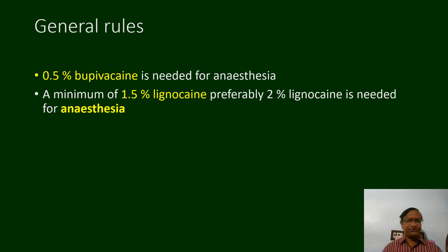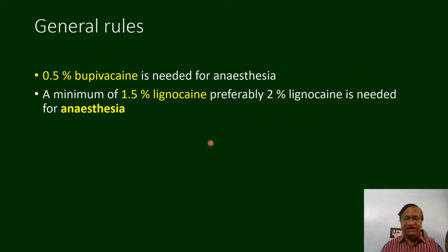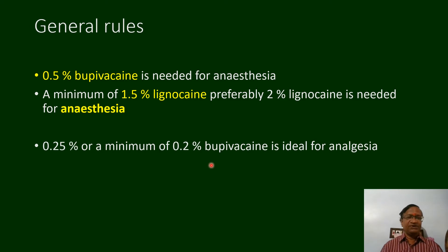Now we go to the general rules. 0.5% bupivacaine is needed for anesthesia. If you are planning to give an epidural for anesthesia purpose — that is complete sensory denervation — we need to use 0.5% bupivacaine or a minimum of 1.5% lignocaine with or without adrenalin. If you go below that, complete sensory denervation may not be achieved. Analgesia is different: 0.25% or 0.2% is needed.